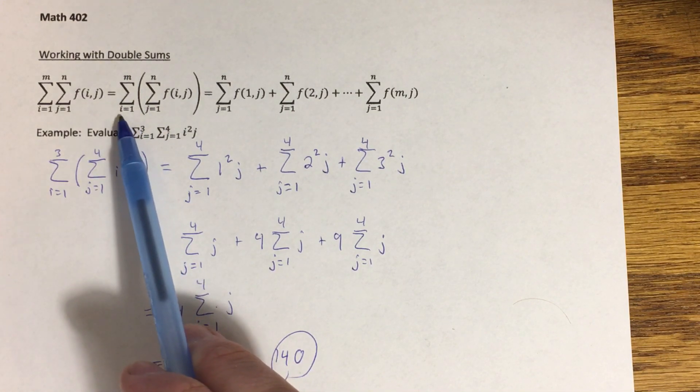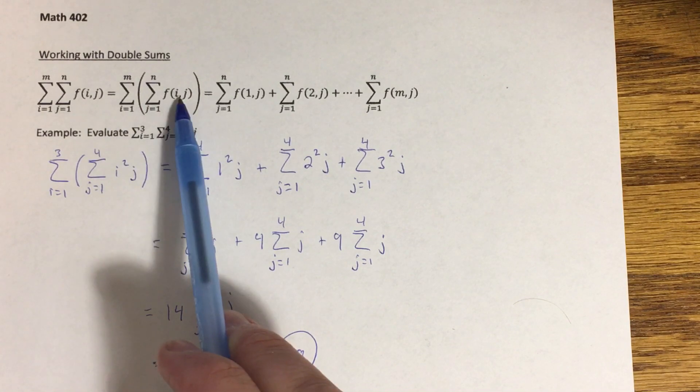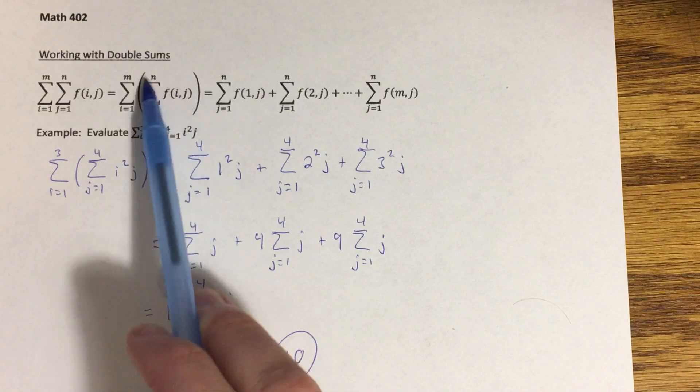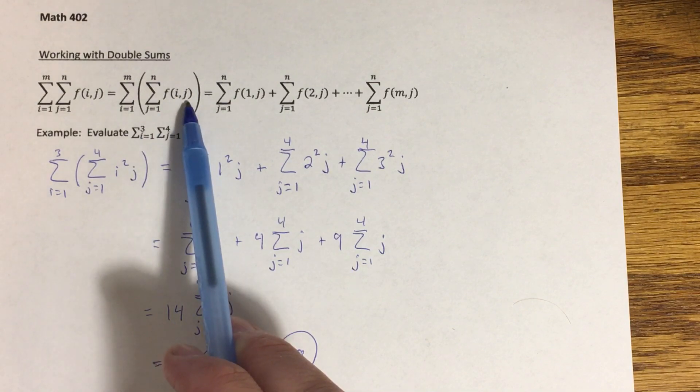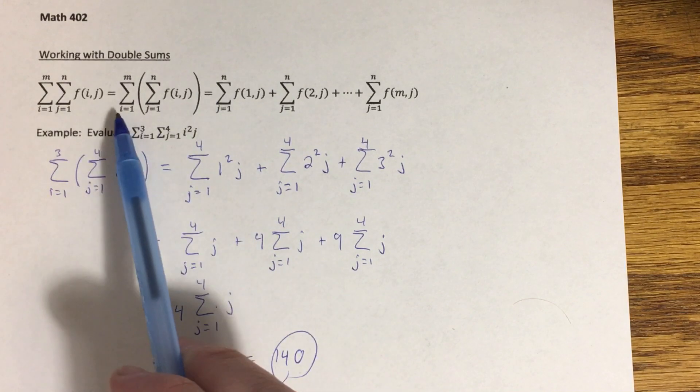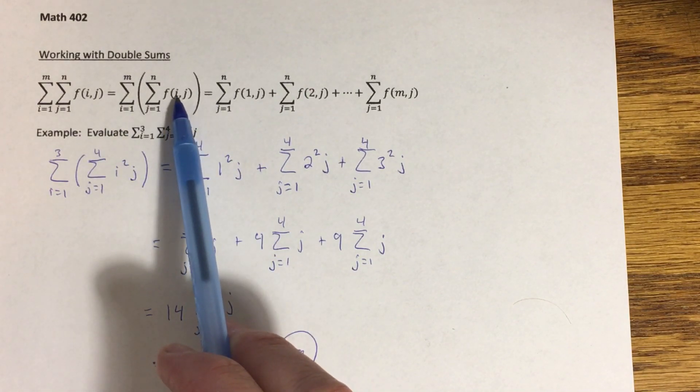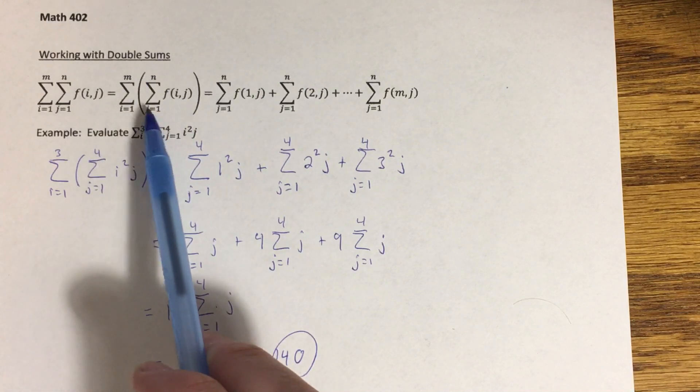Basically i is going from one to m here. I'd plug a one in for this and then evaluate this entire sum expanding using the j's, and then that would give me this sum right here. Then I'd plug in two for i, which shows up here, and then do the sum as j goes from one to n for that function with a two here.